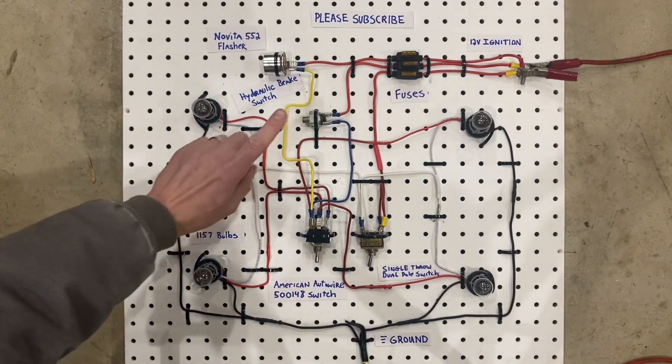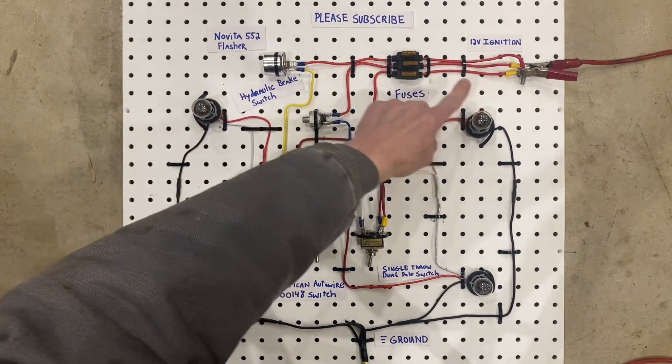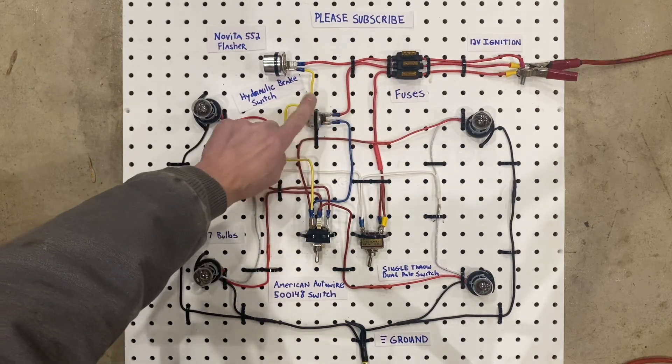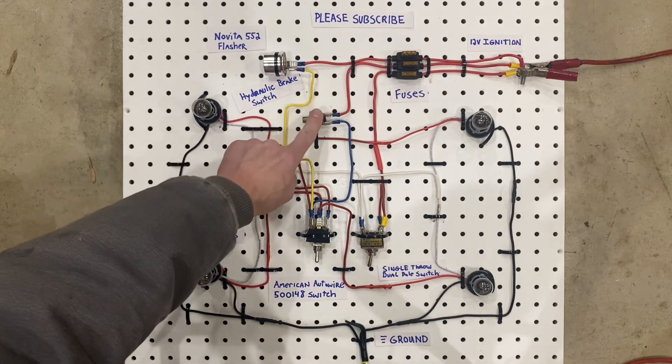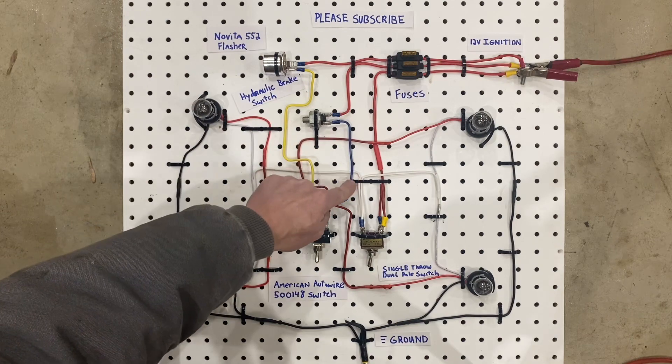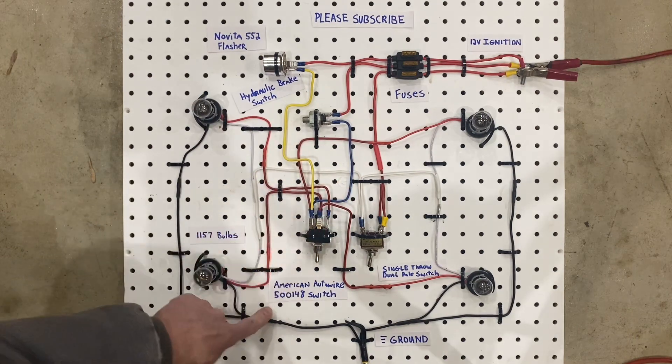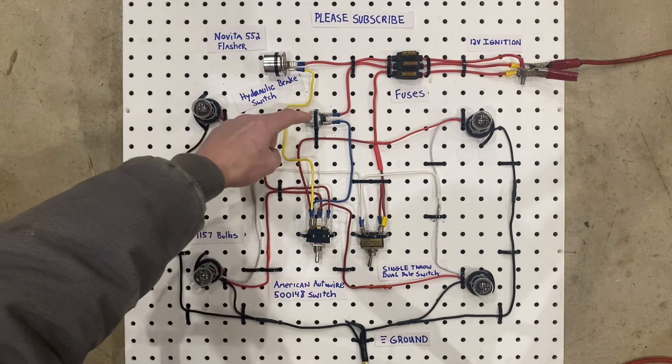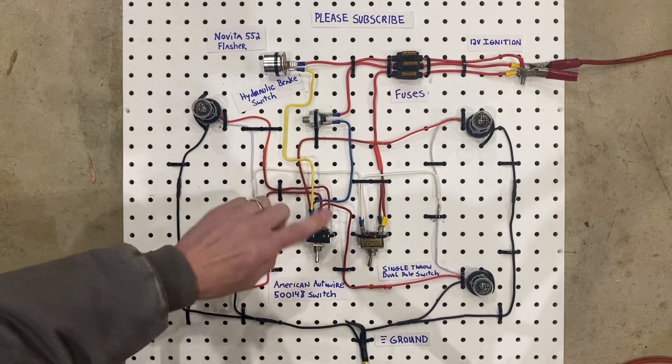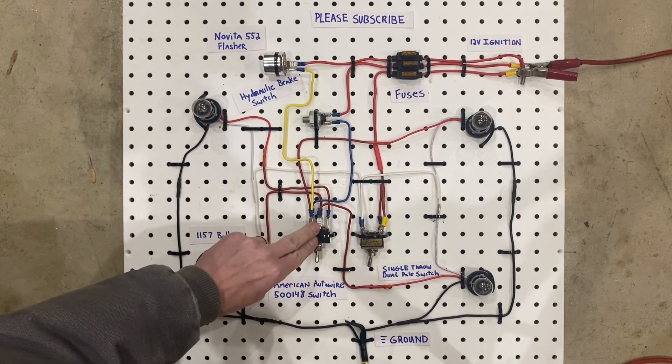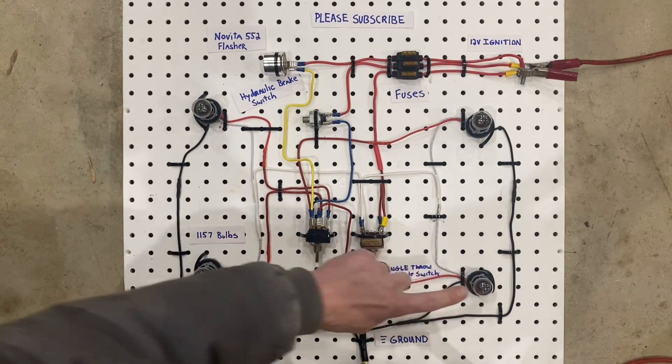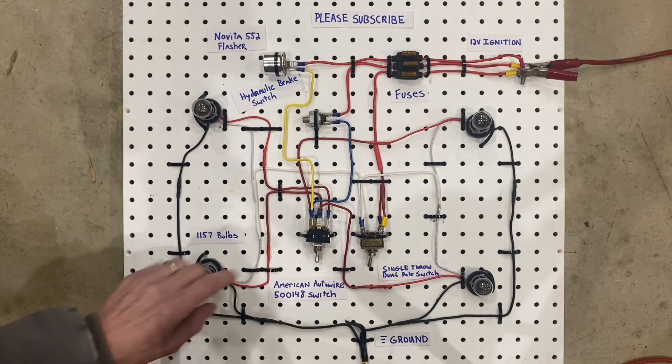Now the next circuit is the brake light circuit. We're going to have power come in, it's 12 volt ignition power, just like the other one, through a fuse, over here it's the red wire, comes to the brake switch. The brake switch is just two pins, so power comes in one side, and then it goes out the blue wire over here to the American Auto Wire 500148 switch. That's basically just taking this power through the switch over here, and then depending on the conditions, this switch is either going to send it to both of these brake lights, or it's only going to send it to one or the other if the directionals are turned on.